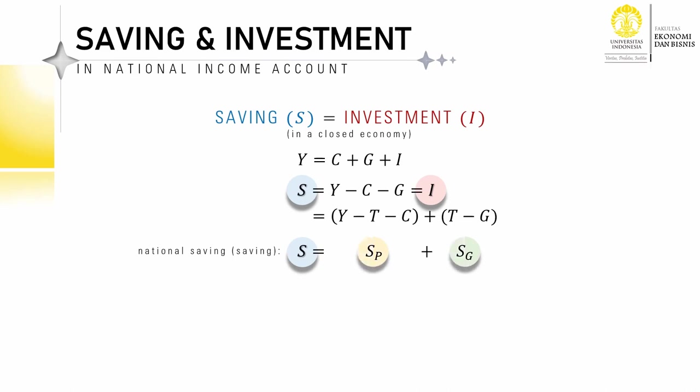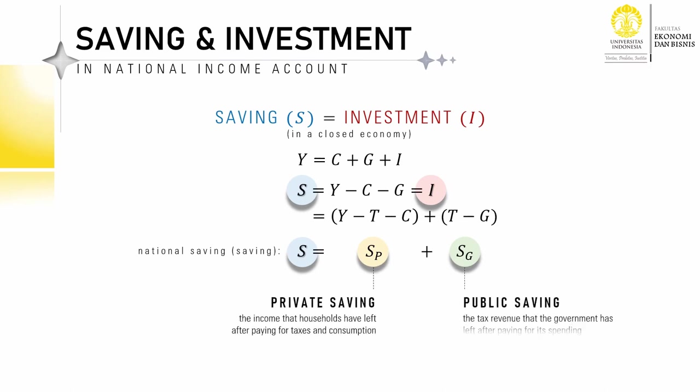But look — now we have two new expressions. The first bracket shows the excess disposable income that is not spent by households, or household saving. The second bracket is the government's budget surplus, which represents public saving.